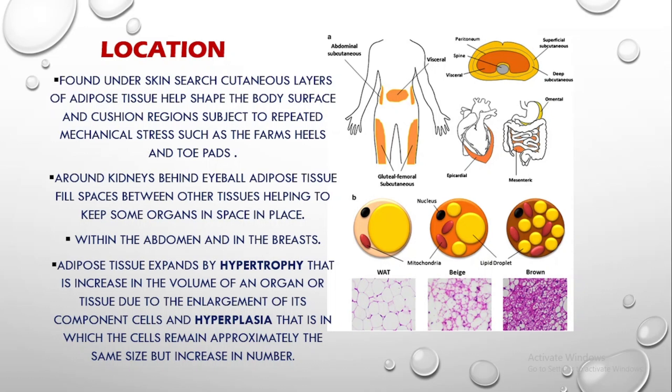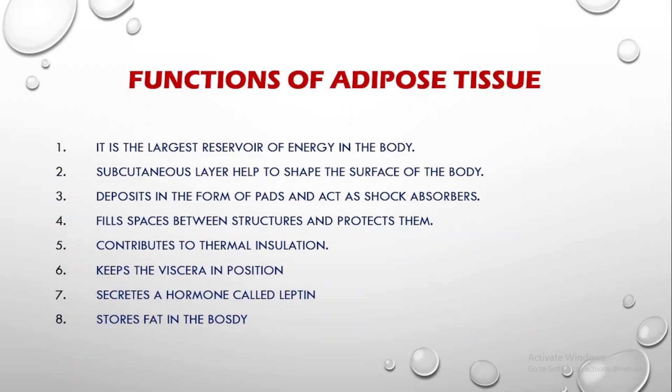Now, adipose tissue can expand in two ways: one is hypertrophy and the other is hyperplasia. Hypertrophy, as you can understand by the word itself — 'trophy' means nutrition — is actually the enlargement of these tissues. Hyperplasia means the number of cells will increase. So they can develop themselves in these two ways.